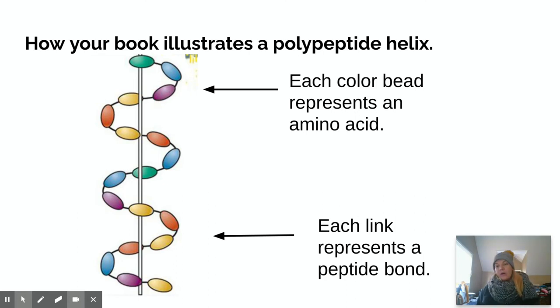So this is how your textbook illustrates the polypeptide helix. Each bead here represents a different amino acid. And you'll notice that it's kind of wrapping around—that indicates the helix. And then each link in this polypeptide represents the peptide bond that is holding the amino acids together.